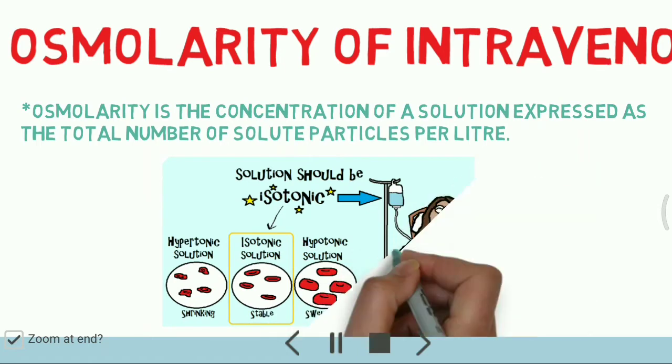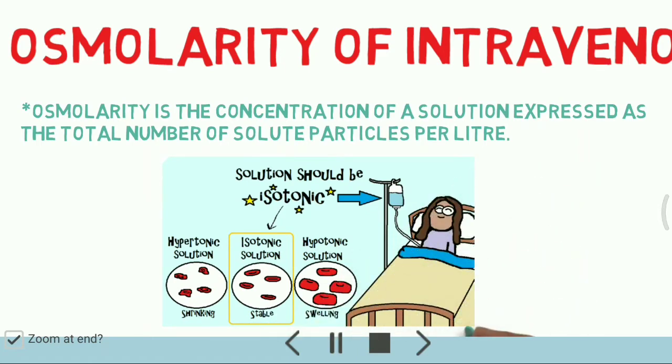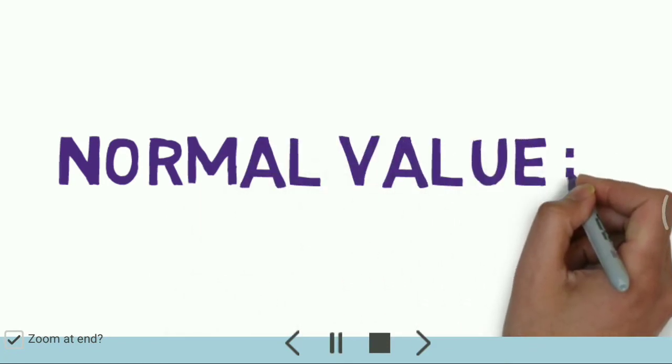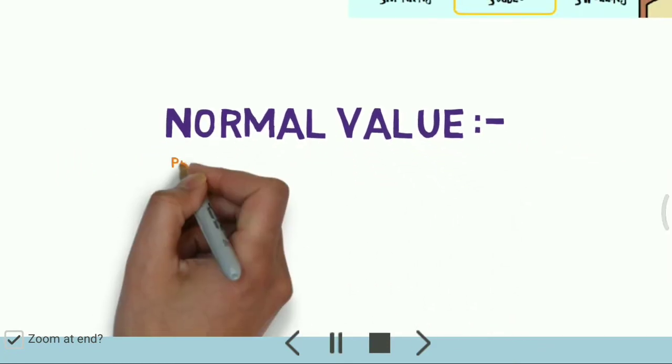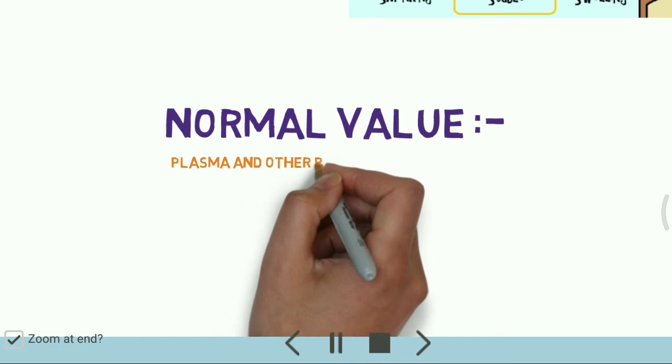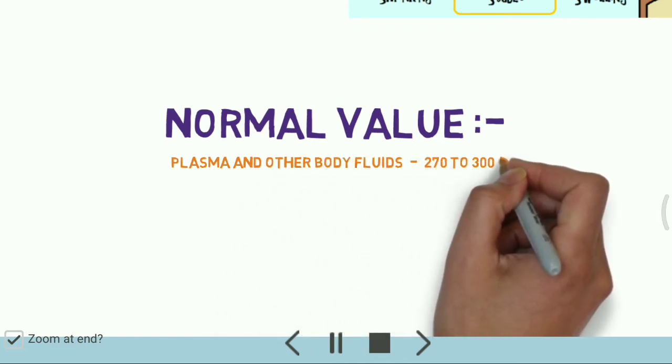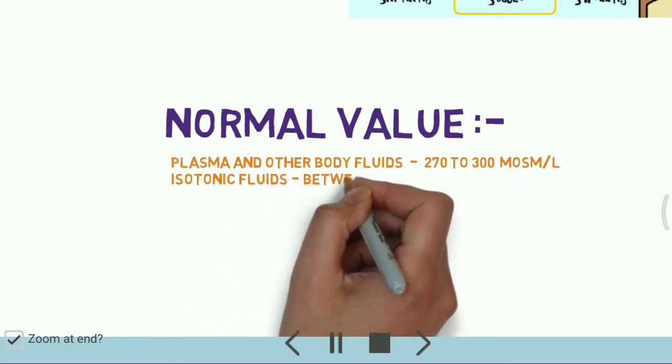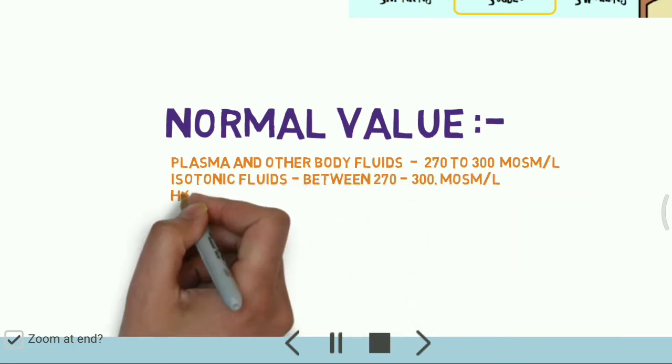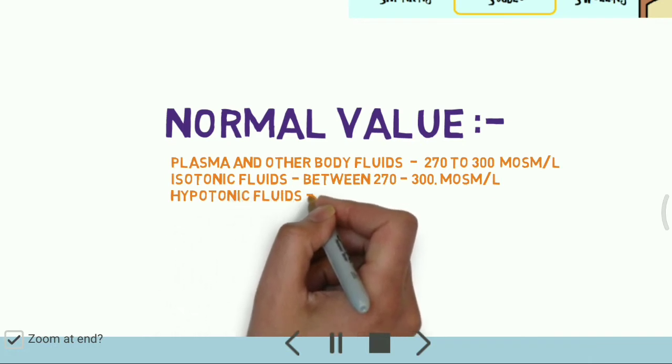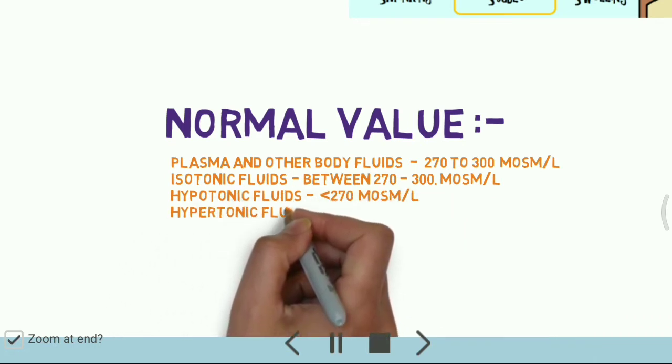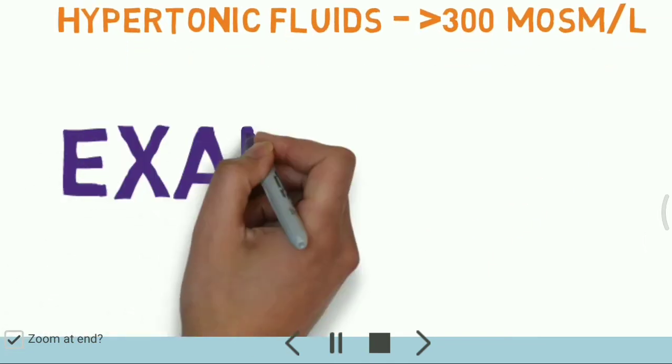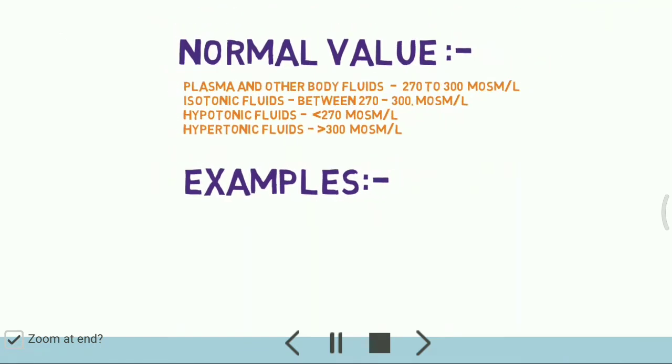The normal values are: plasma and other body fluids, 270 to 300 milliosmoles per liter. Isotonic fluids: between 270 to 300 milliosmoles per liter. Hypotonic fluids: less than 270 milliosmoles per liter. And for the hypotonic fluids: more than 300 milliosmoles per liter.